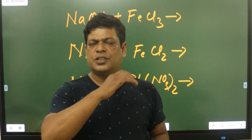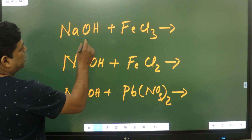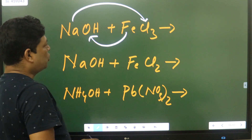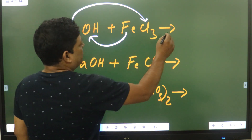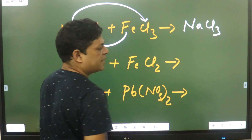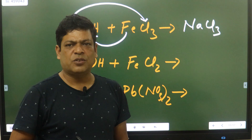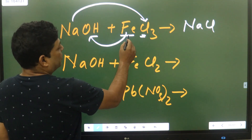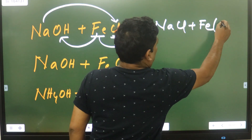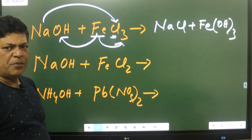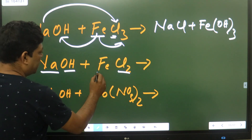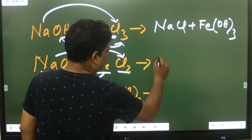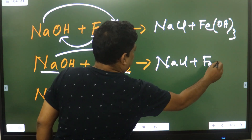We will practice double displacement reaction. First, NaOH is combined with FeCl3. Na is combined with Cl and Fe is combined with OH. We will practice NaCl and FeOH. Again, NaCl3 plus FeOH2.